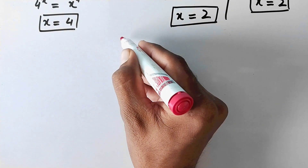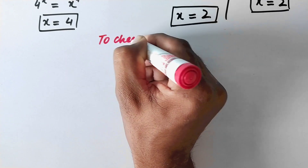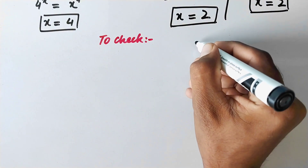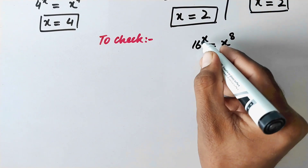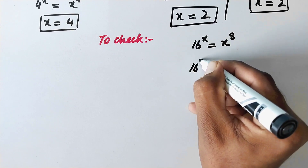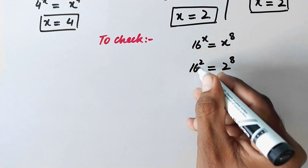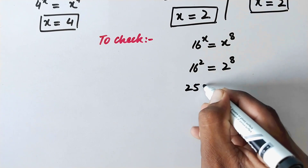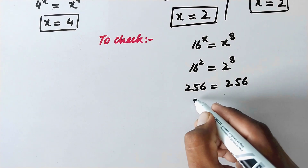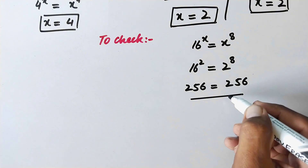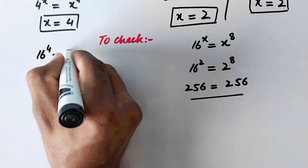Now we will check whether these solutions verify the equation or not. Our equation is 16 to power x is equal to x to power 8. When x is equal to 2, substituting confirms the equation holds, so that solution is verified as true. When x is equal to 4, we substitute next.